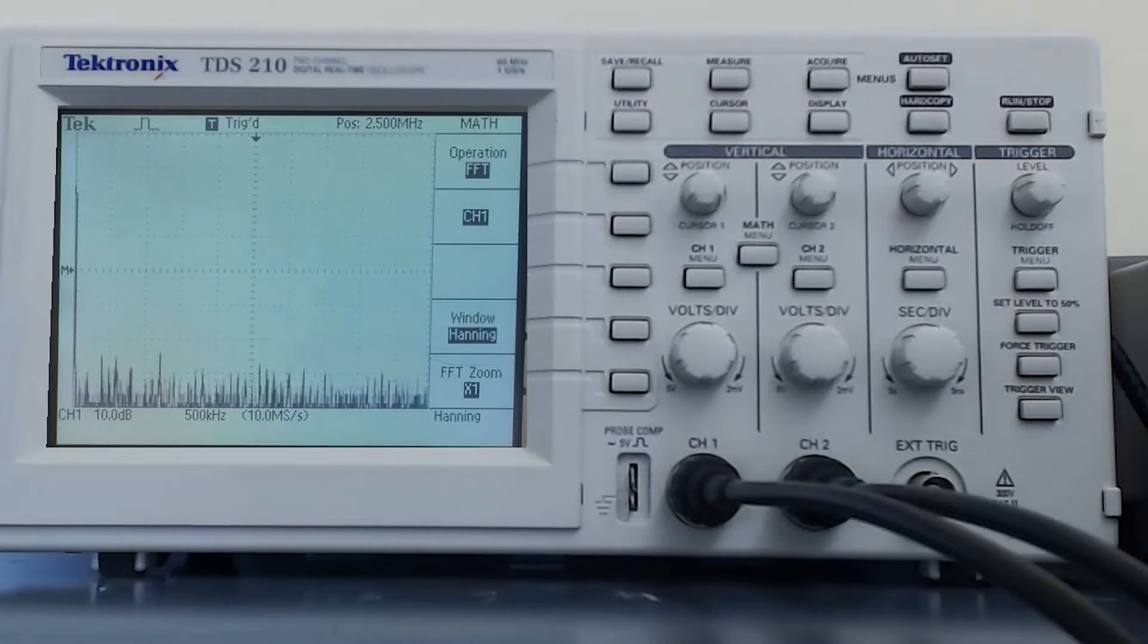The fast Fourier transform of the signal allows us to see what frequency components are present in the waveform. In this case, since we are looking at a sine wave output from the function generator, we see one peak on the left hand side of the display and a bunch of noise to the right. This is because the waveform is almost a pure sine wave.